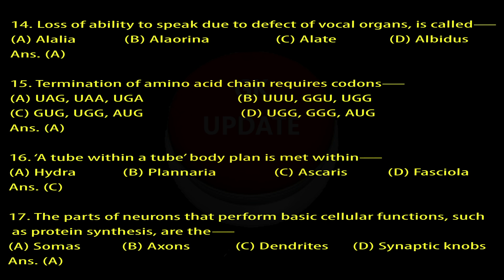Question 17: The parts of neurons that perform basic cellular functions, such as protein synthesis, are. A. Somas, B. Axons, C. Dendrites, D. Synaptic knobs. Answer: A.